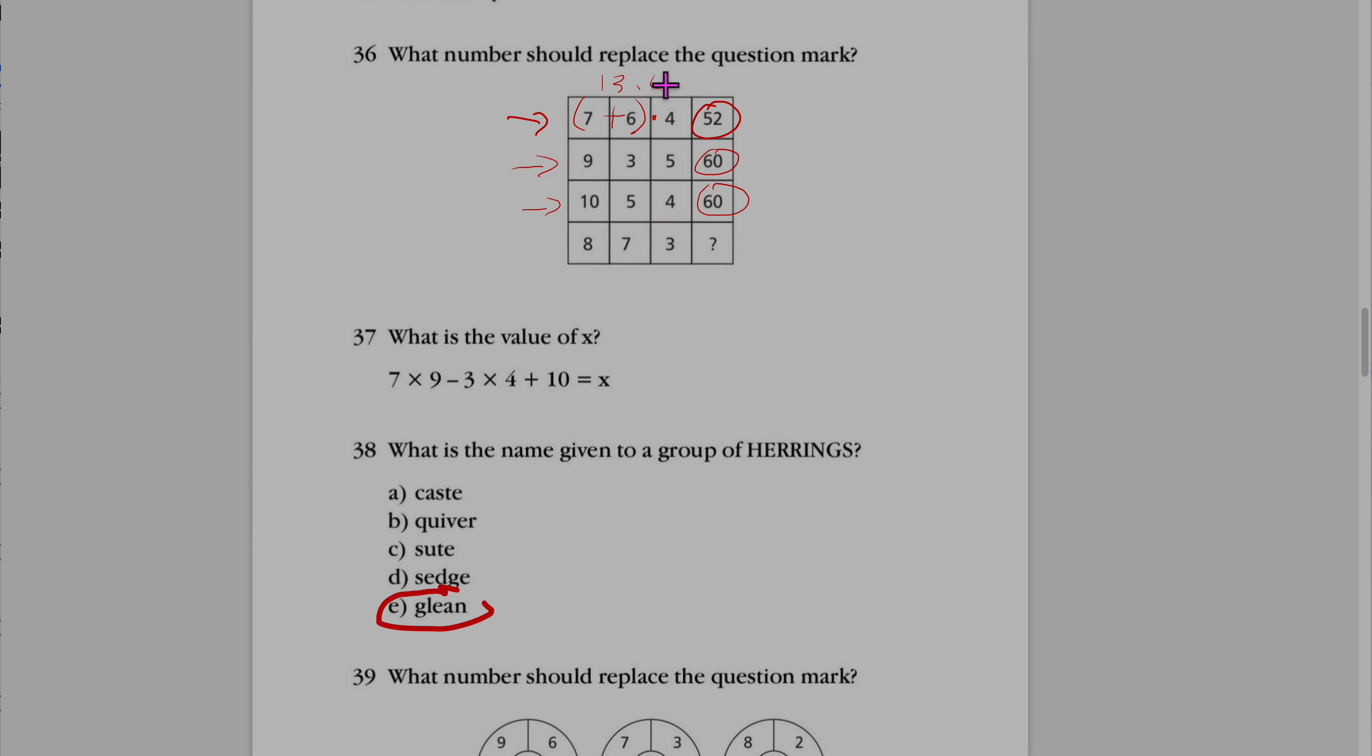So it's 13 times 4, you get 52. Right? And for the next one, it's 12 times 5.